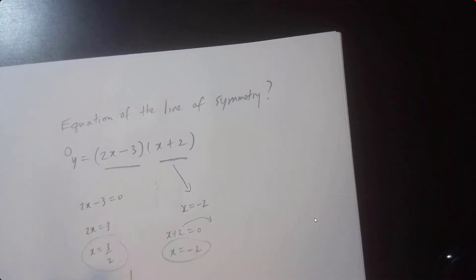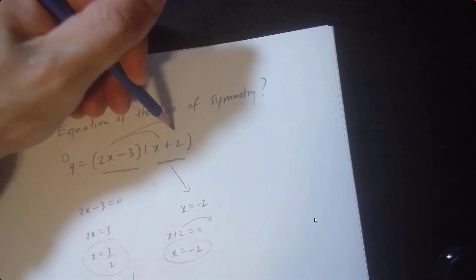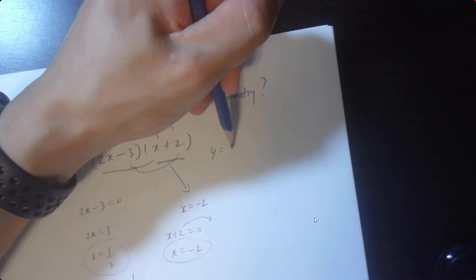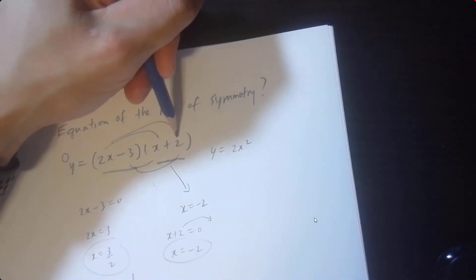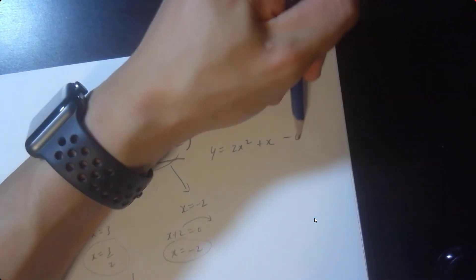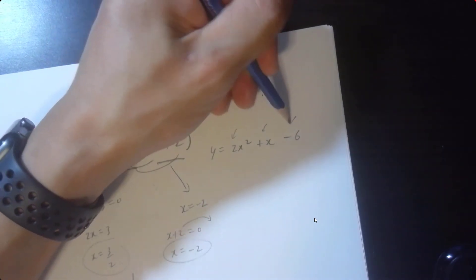Another approach to find the equation of the line of symmetry is to expand and use some formula. So let's use FOIL: first, outside, inside, last. We have y equals 2x squared, positive 4x minus 3x is plus x, negative 3 times 2 is negative 6. So this is my a value, my b value is 1, and my c value is negative 6.